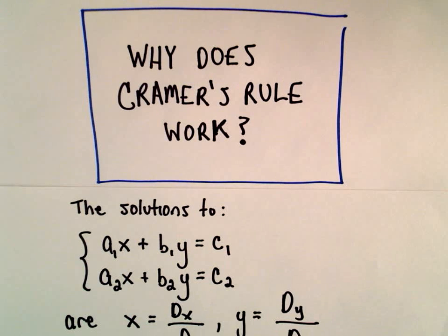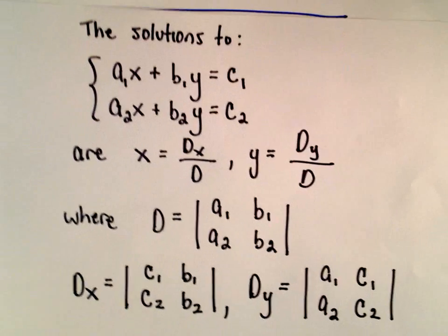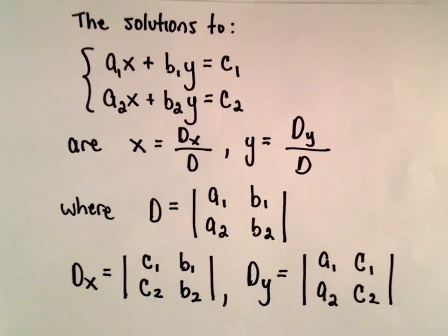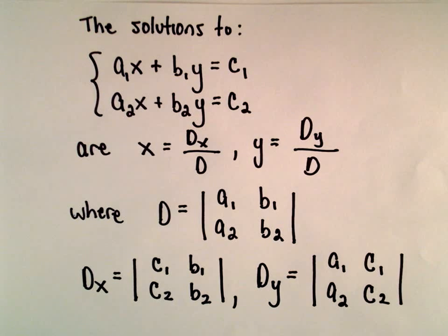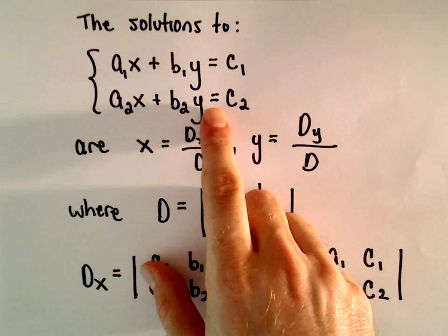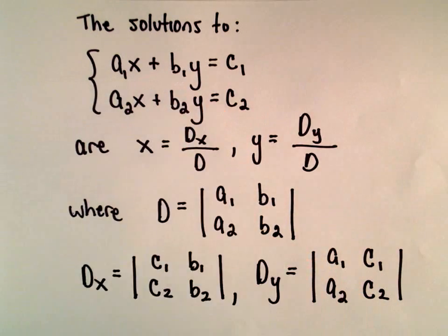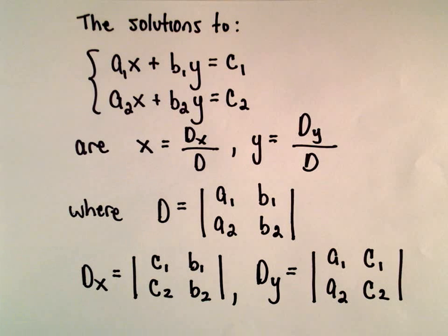Here we're going to look at why Cramer's Rule works. Cramer's Rule is a way to solve systems of linear equations. You run into it either in algebra or certainly in a linear algebra class. I'm going to do the case where we have two equations with two unknowns. The same process will work on larger systems — it's going to get a little more messy to justify, but the idea is exactly the same.